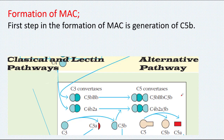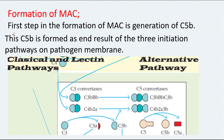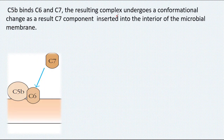Now we discuss the formation of the membrane attack complex. The first step is the generation of C5b. As we have seen in previous lectures, C5b is formed as the end result of three initiation pathways: classical, lectin, and alternative pathways. This C5b is then attached on the surface of the pathogen.